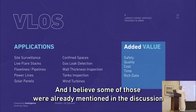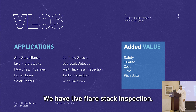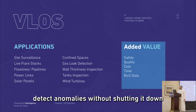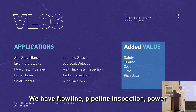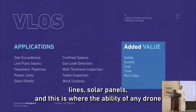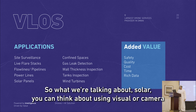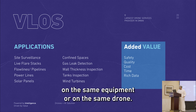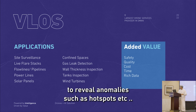When it comes to applications — and some of those were already mentioned in the panel discussion — talking about VLOS, we have site surveillance, live flare stack inspection, the ability to inspect the flare and detect anomalies without shutting it down while maintaining a safe distance. We have flow line, pipeline inspection, power lines, and solar panels. For solar, you can use camera drones to detect anomalies like sand accumulation, defects, cracks, and broken glass, or mount thermal cameras to reveal hotspots.